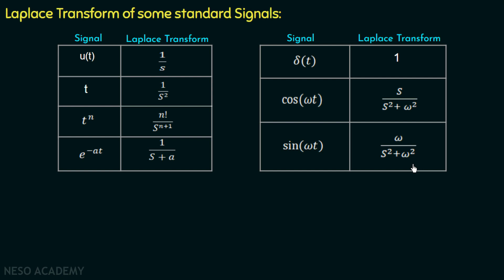All these Laplace transforms can be obtained using the same expression, and deriving them will be your homework task. One hint for cos(ωt) and sin(ωt): we use the complex conjugate property of sinusoidal functions. We can write cos(ωt) as (e to the power jωt plus e to the power minus jωt) over 2, and sin(ωt) as (e to the power jωt minus e to the power minus jωt) over 2j. These are the hints to calculate those transforms.